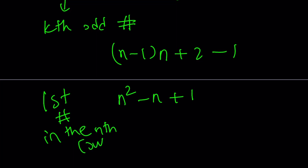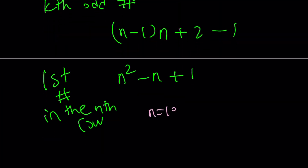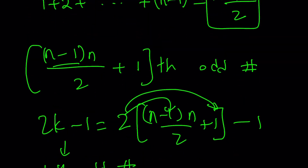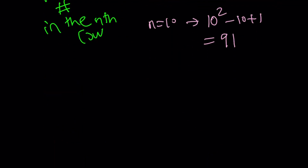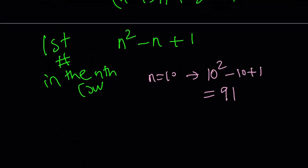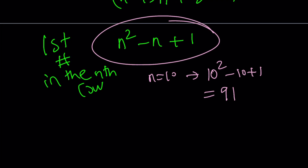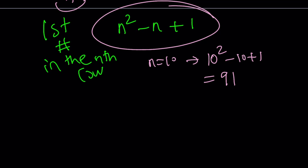Let me verify this. If you replace n with 10, you get 10 squared minus 10 plus 1, which is 100 minus 10 plus 1 equals 91. And that matches the answer from question one — 91. Using this formula you can even find the first number in the millionth row. That's really cool. Thank you for watching. I hope you enjoyed it. Please don't forget to comment, like, and subscribe. I'll see you tomorrow with another video. Until then, be safe, take care, bye-bye.